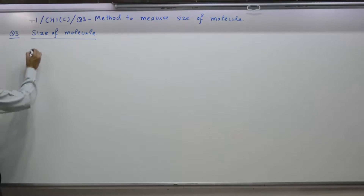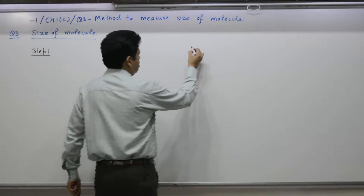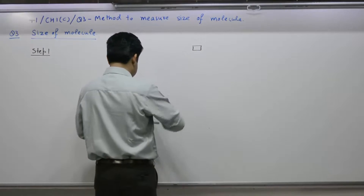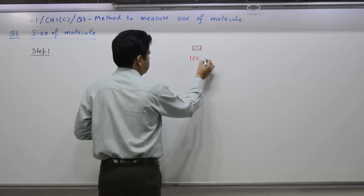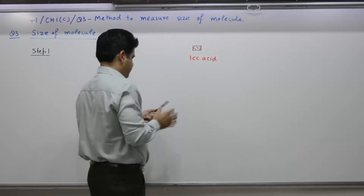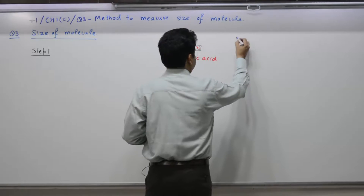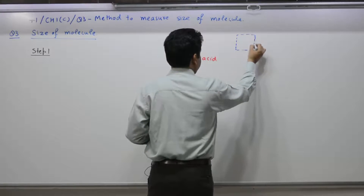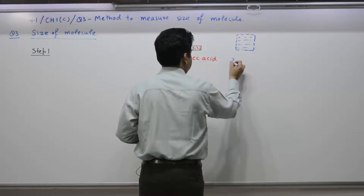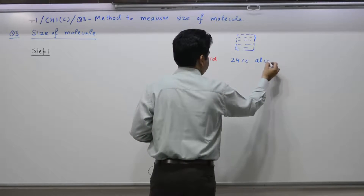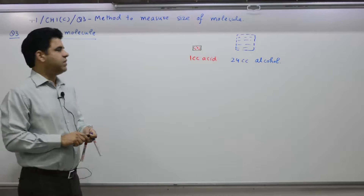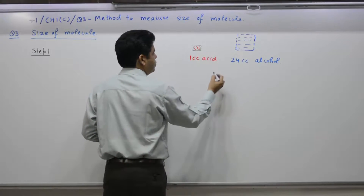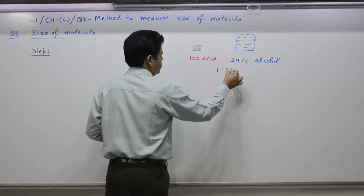Step number 1: Take 1 cc of acid — red color represents acid — and 24 cc of alcohol. The total is 25 cc. What is the ratio? Acid to alcohol ratio is 1 is to 24.